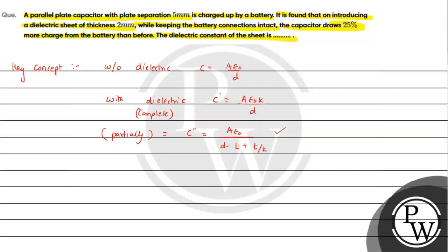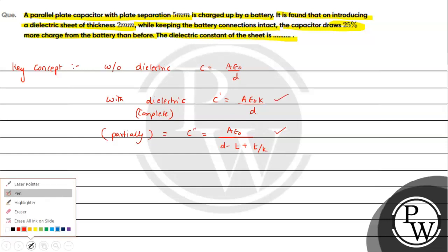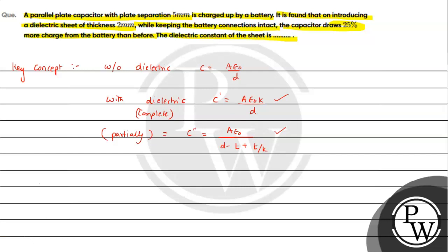We should keep the partially filled capacitance result in mind, since when the thickness t equals d it reduces to the completely filled case. Now we can use this result directly. Since the charge drawn is 25 percent more, we set up the equation accordingly.